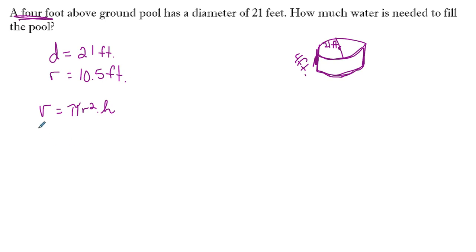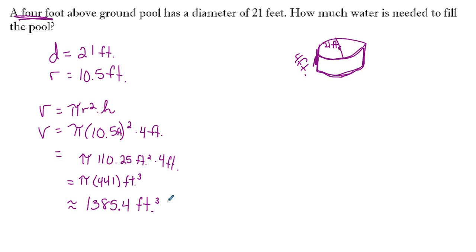So fill in what we know. The volume equals pi times 10.5 squared times our height of 4. That is pi times 110.25 feet squared times 4 feet, which gives us pi times 441 cubic feet. So volume will always be in terms of cubic feet. So our exact answer is 441 pi. The approximate answer is going to be 1385.4 cubic feet of water is needed to fill that pool.